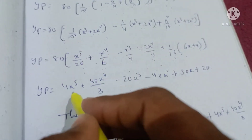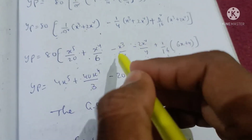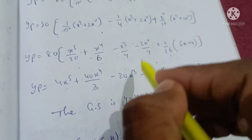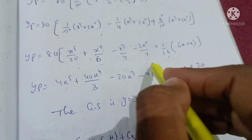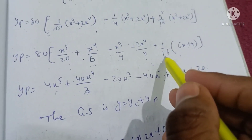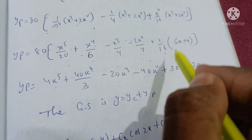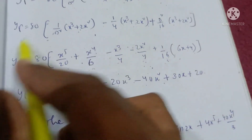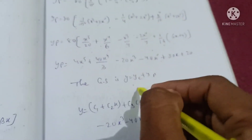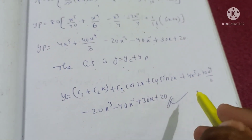Combining all terms: yp equals x to the 5 divided by 20 plus 2x to the 4 by 12 minus x cubed by 4, with remaining terms 20x squared and constants. The general solution is y equals yc plus yp, where yc equals (c1 plus c2 x) plus c3 cos(2x) plus c4 sin(2x), and yp is the computed particular solution.